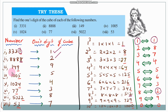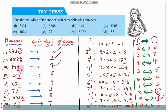For 149: the number ends in 9. Since 9³ = 729, the units digit of the cube is 9. For 1005: the number ends in 5. Since 5³ = 125, the units digit of the cube is 5.